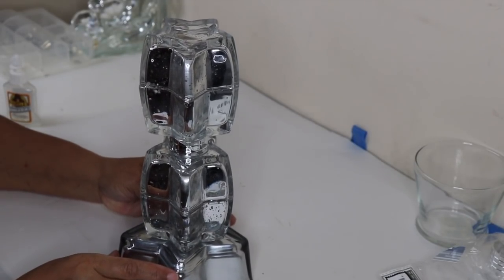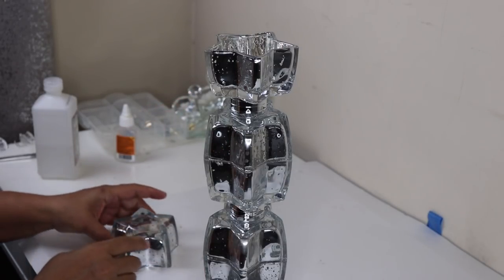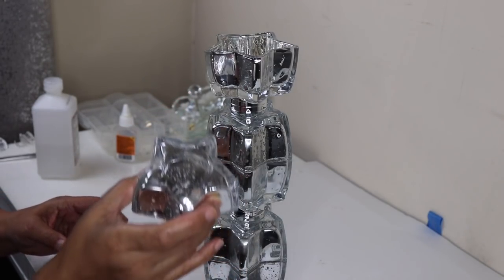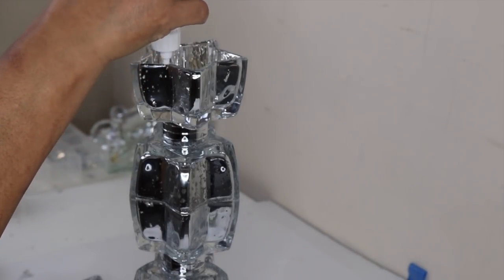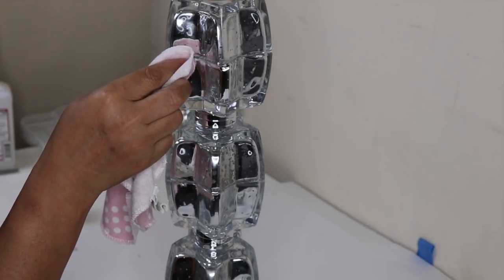Now put that aside to dry. Off camera I added another napkin ring and tea light holder so now we're going to add our sixth and final tea light holder to the top. Make sure to wipe off any excess glue.